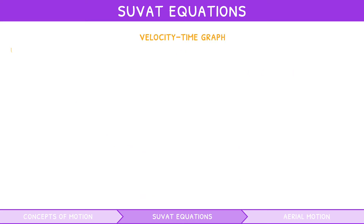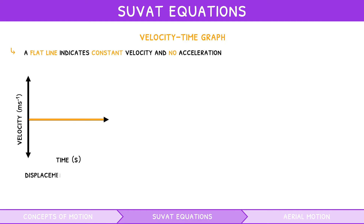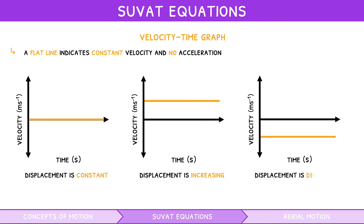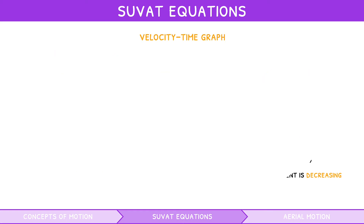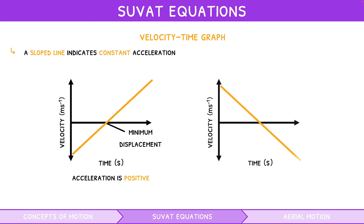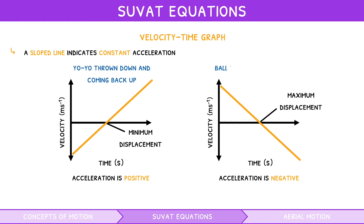In a velocity-time graph, a flat line indicates constant velocity and no acceleration. If it is zero, displacement is constant; if it is positive, displacement is increasing; if it is negative, displacement is decreasing. Examples include a stationary car, a car moving forwards, and a car moving backwards, respectively. A sloped line indicates constant acceleration. If it slopes upwards, acceleration is positive; at zero, displacement is at a minimum. If it slopes downwards, acceleration is negative; at zero, displacement is at a maximum. Examples include a yoyo being thrown and a ball being thrown, respectively.